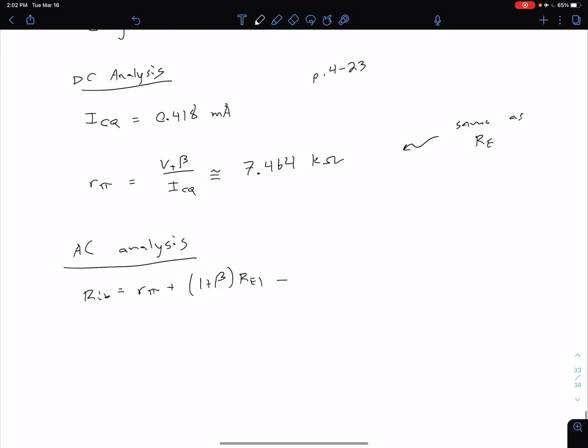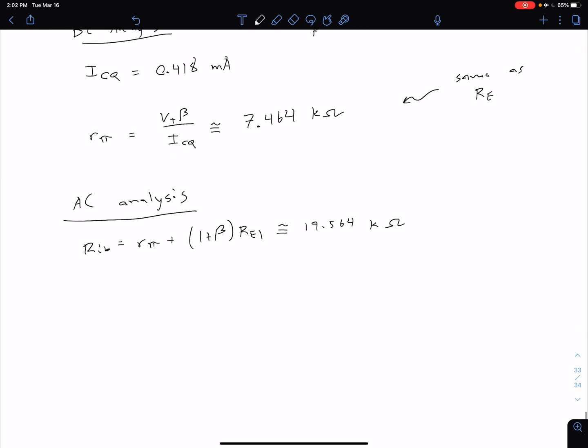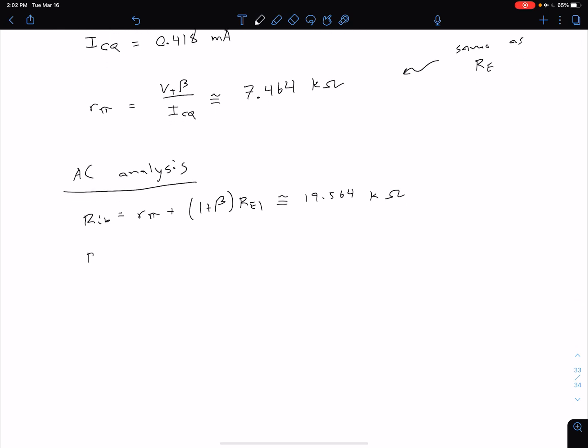This value is now going to be smaller. So now we have 19.564 k ohms as opposed, I believe, in the previous example that was something on the order of 70 k ohms. So we've reduced that quite significantly. Our Ri is also going to be multiplied by a factor of about one half. So we have R1 parallel with R2 parallel with Rib. The only one that's changed of those three is Rib. Plugging in those values, we see that that is approximately 14.610 k ohms.